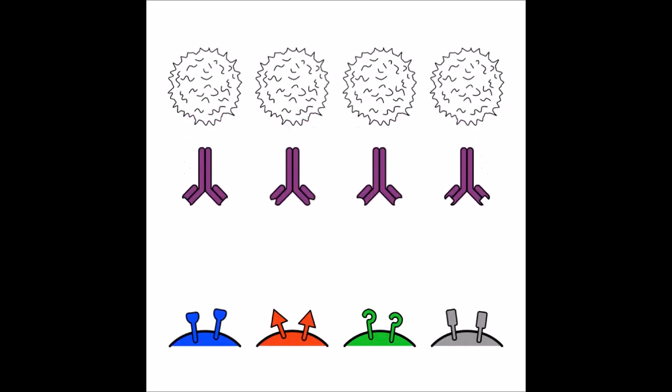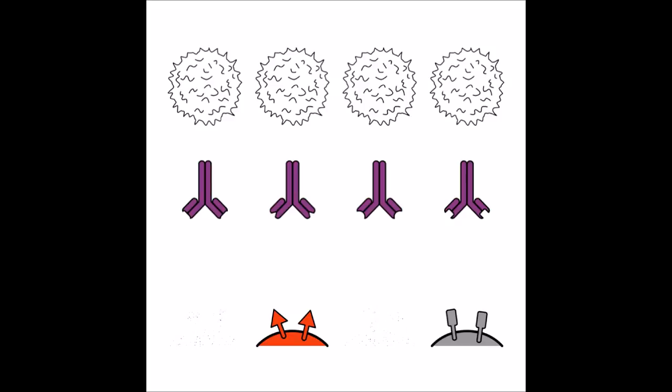The B cells in our body produce lots and lots of different antibodies, so that we can detect lots and lots of different kinds of cells that might enter our body from the outside. In this way, the immune system can fight almost anything that has different surface antigens compared to our own cells.